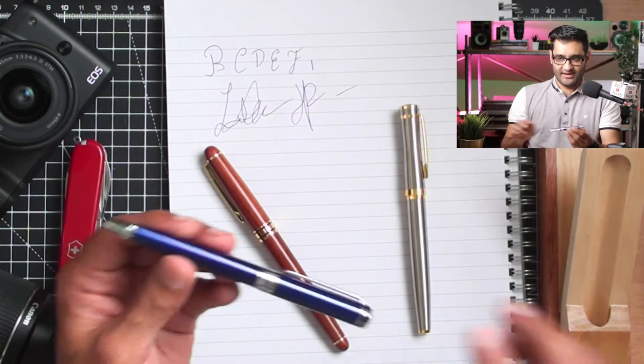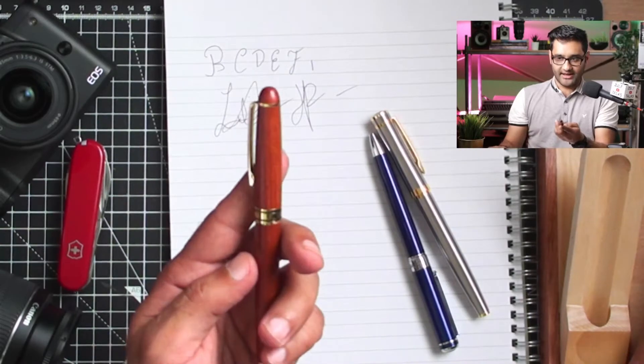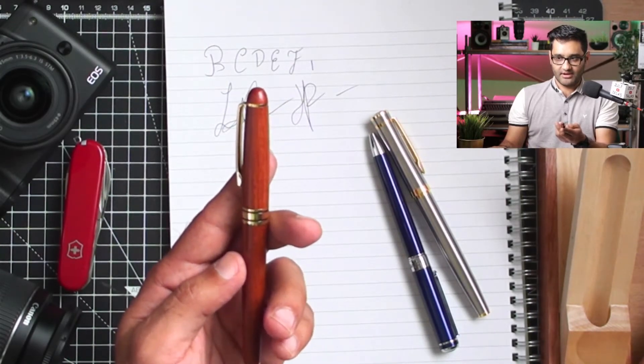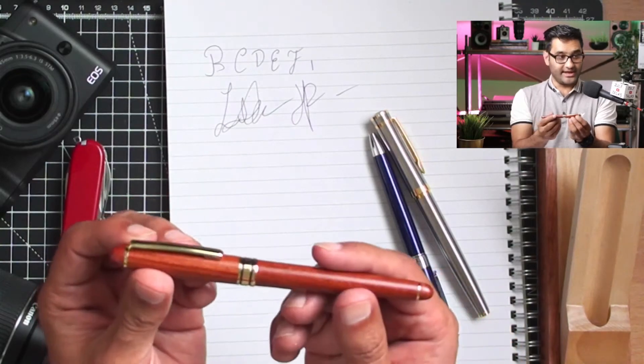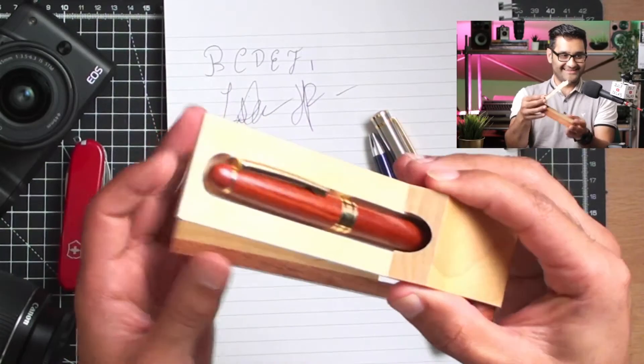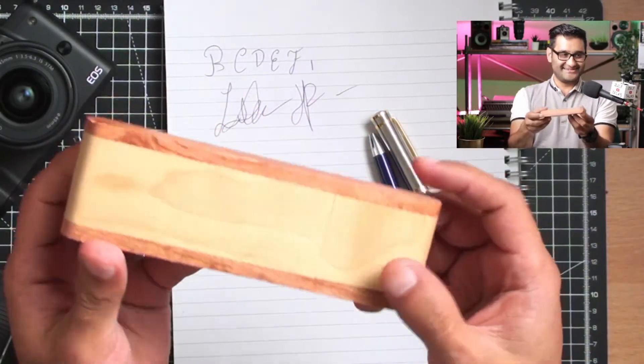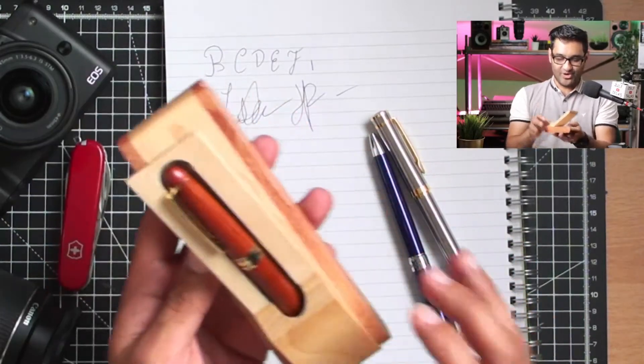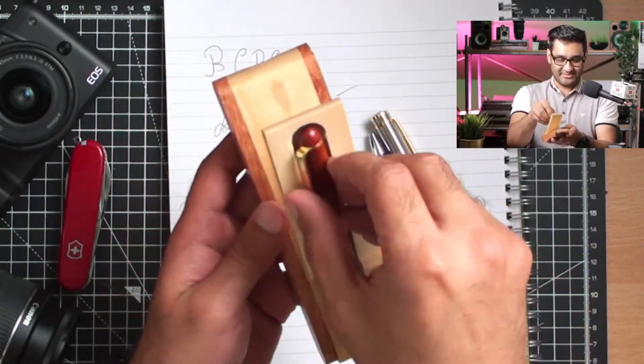And then we've got the wooden one here, which is only $20. But this one - come on now, look at that. This gives you something to do doesn't it, reminds you of the old wooden train sets as kids.